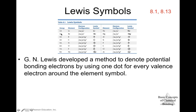For example, lithium is from family one, so it has one valence electron. We write the Lewis symbol for lithium as Li with one dot. Sodium is also from family one, so we represent sodium as Na with one dot. Beryllium is from family two, so we use the symbol of beryllium with two electrons, one on each side — they need to be separated. Magnesium is also from family two, so it also has two electrons in its Lewis symbol.